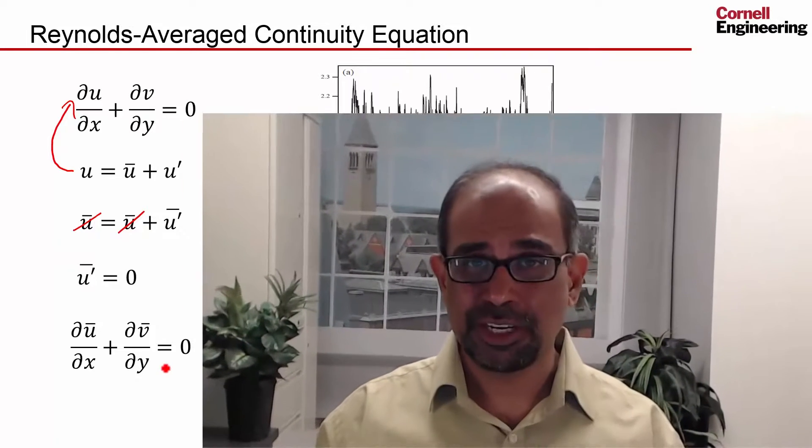So since continuity is linear for incompressible flows, the Reynolds average version of continuity is the same as the original continuity equation. We'll see that this is not the case for the conservation of momentum equation.